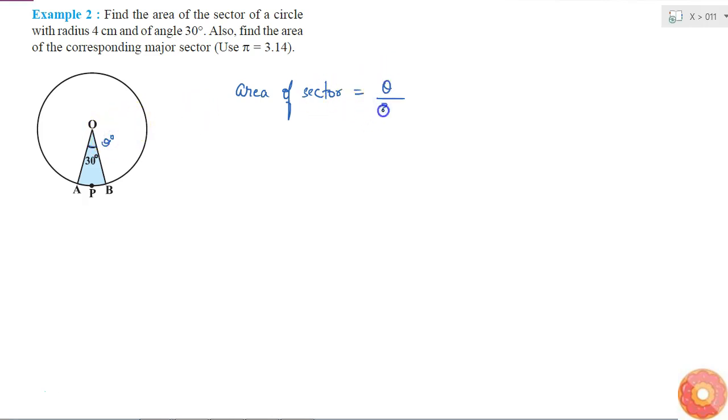Then area of sector equals theta by 360 into pi r squared. Why? Because if I consider the entire circle, the area is pi r squared and theta equals 360 degrees.